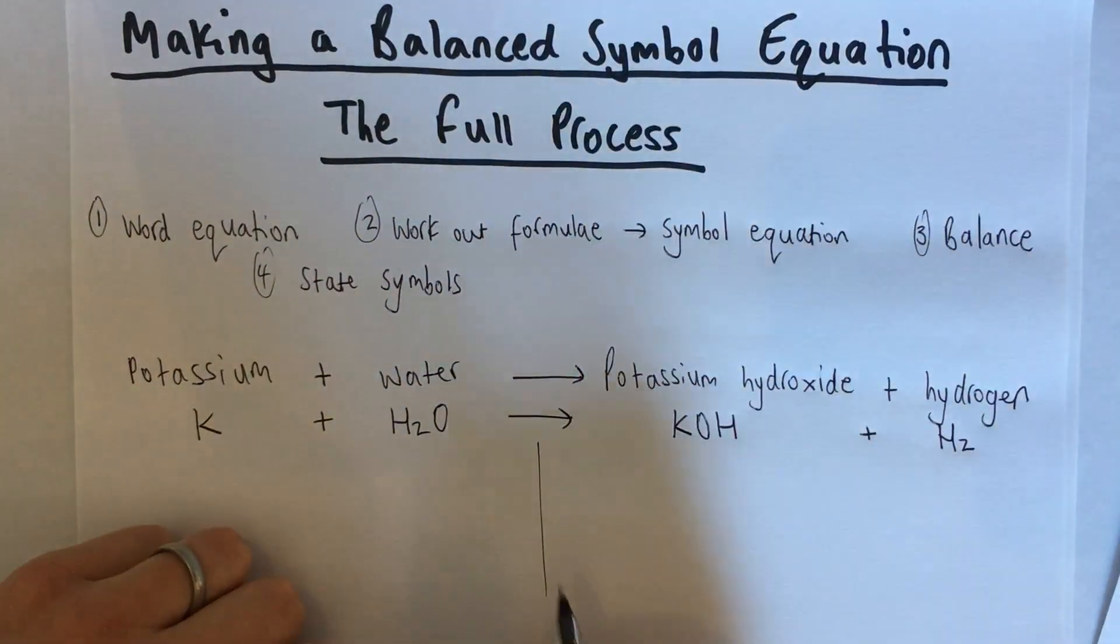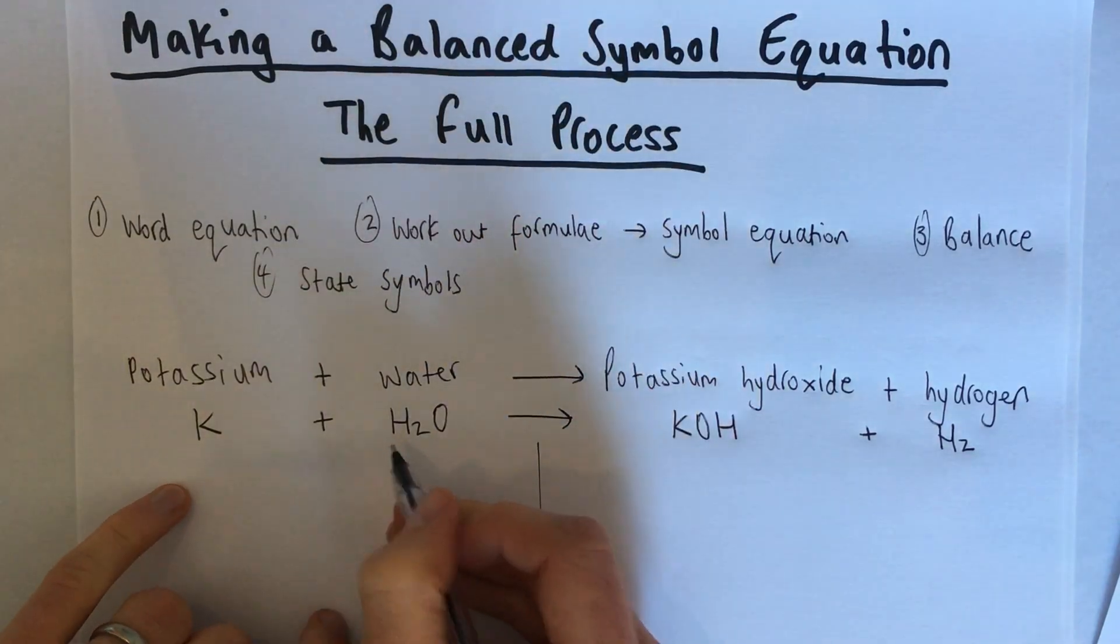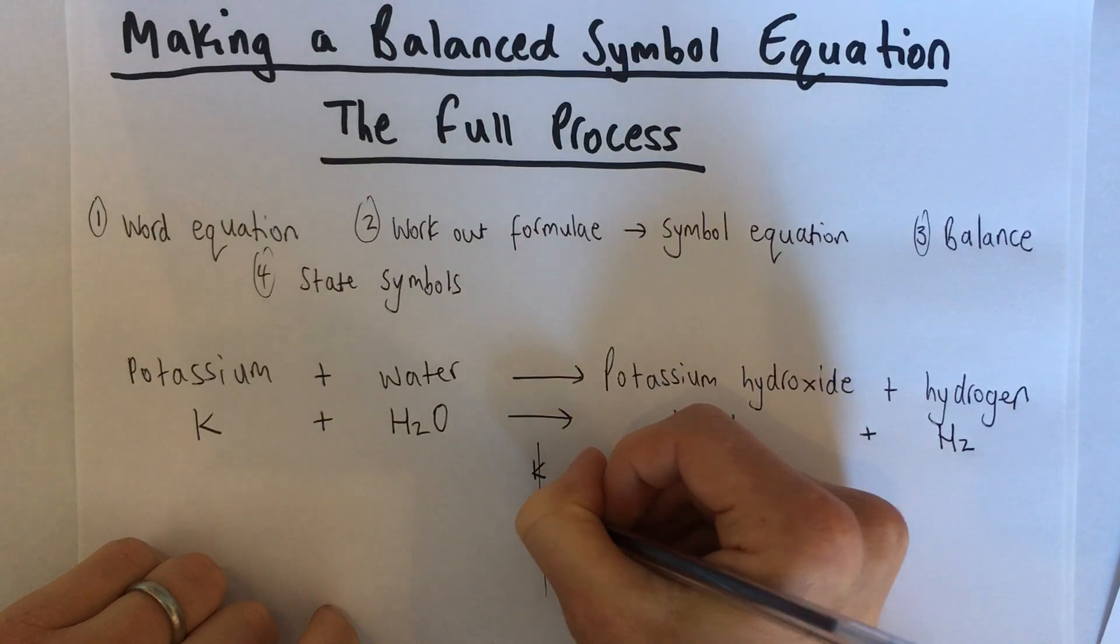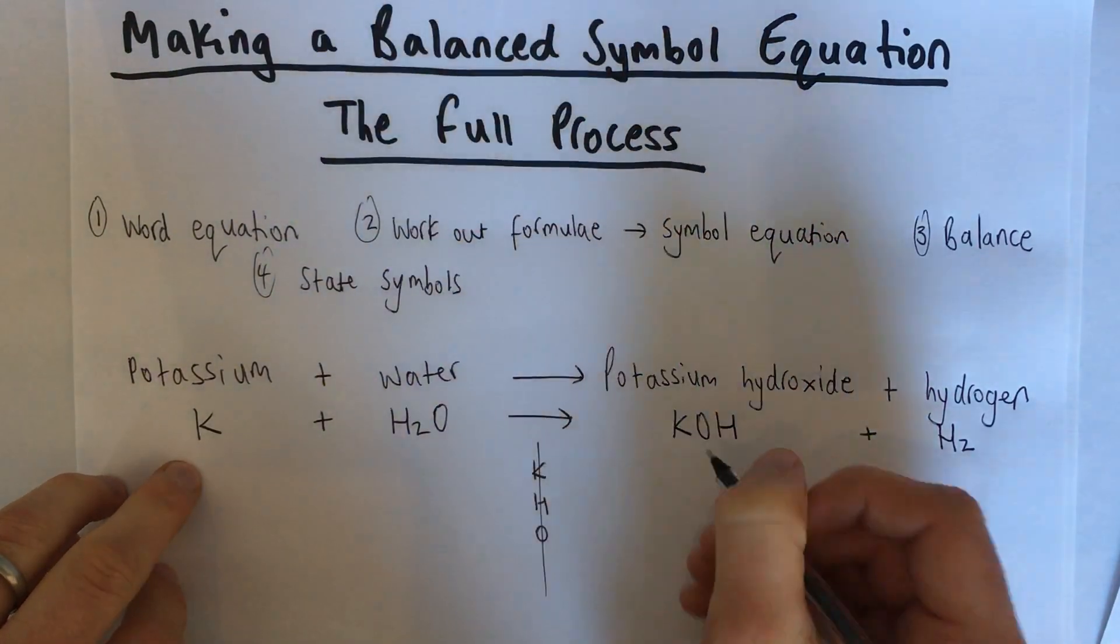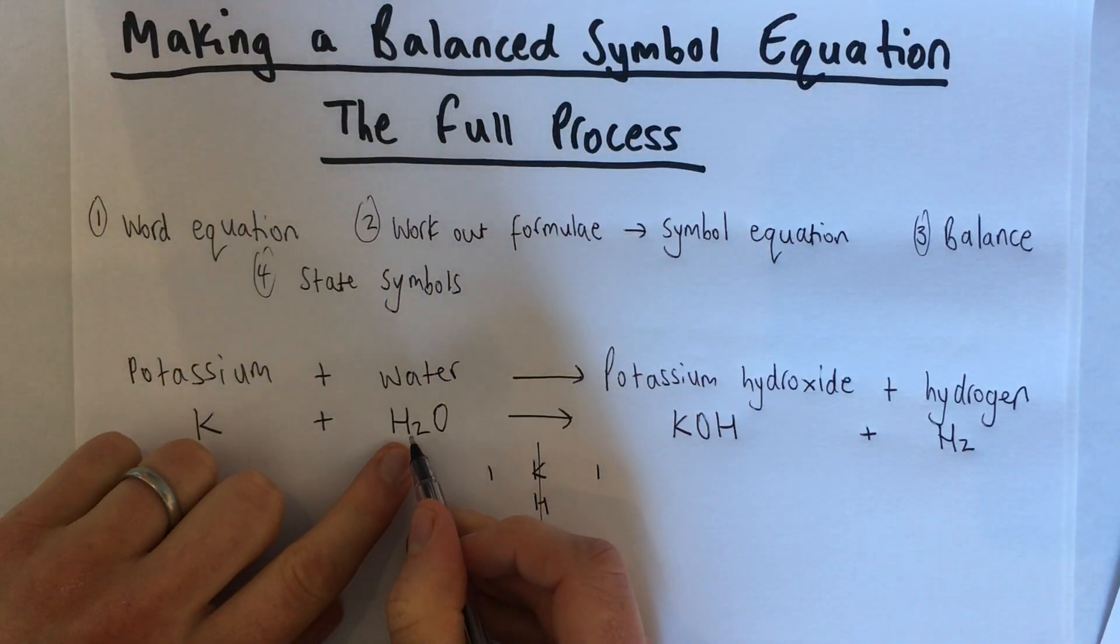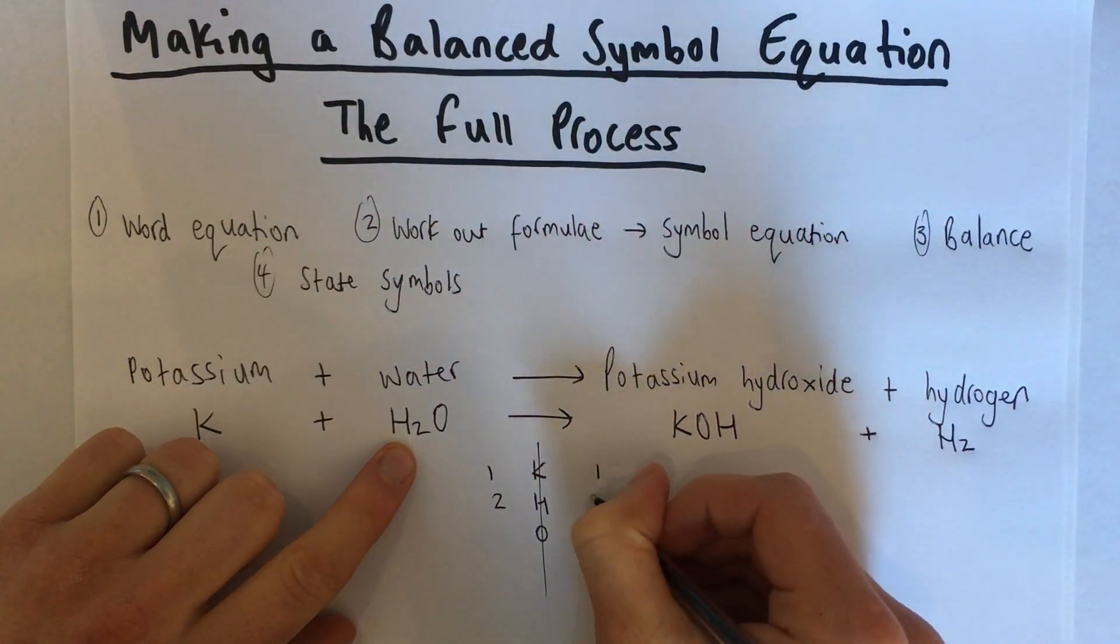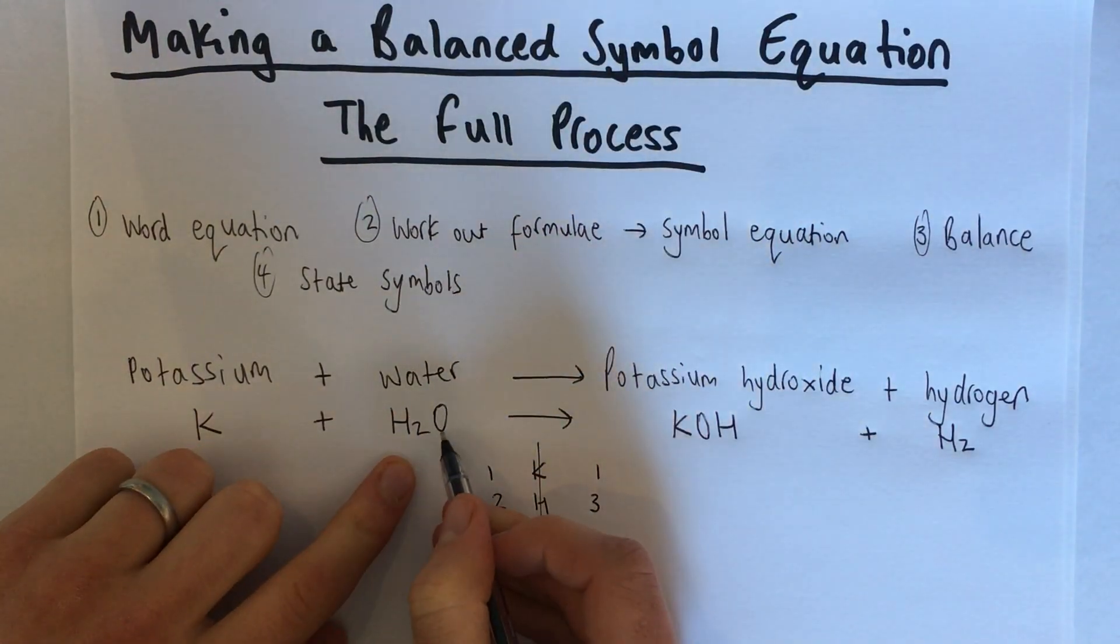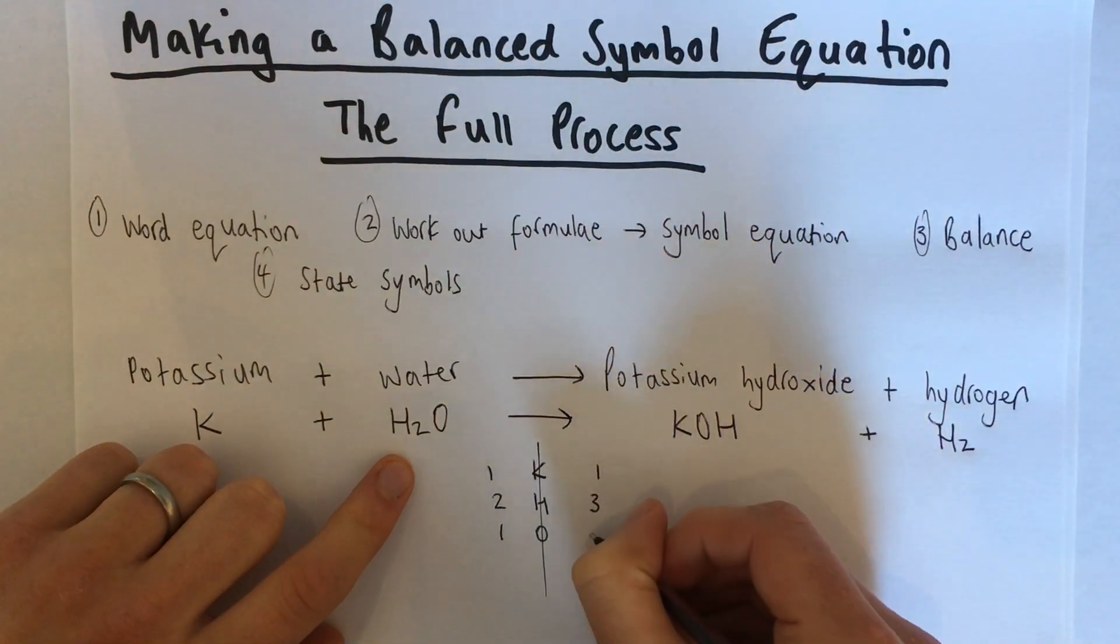Line down the middle, I'm going to write down the different types of atoms that are in here. There's potassium atoms, hydrogen atoms and oxygen atoms. Okay, K, H and O. On the left, there's one potassium atom. On the right, there's one. On the left, there's two hydrogen atoms. And on the right, there's one, two, three. On the left, there's one oxygen atom. On the right, there's one oxygen atom.